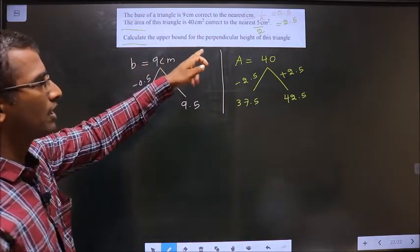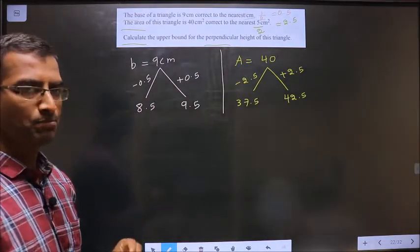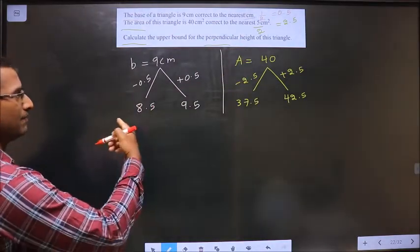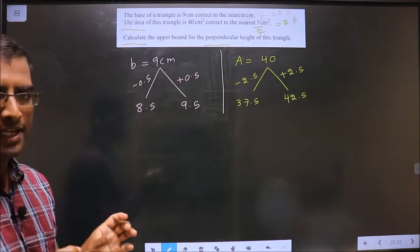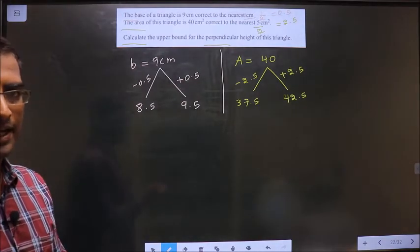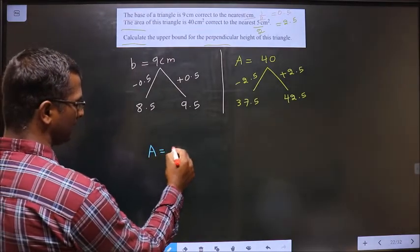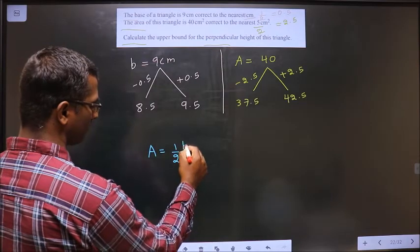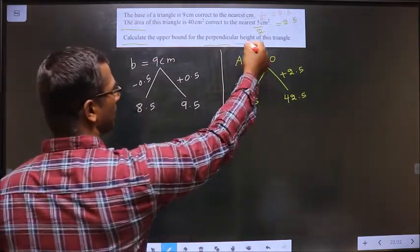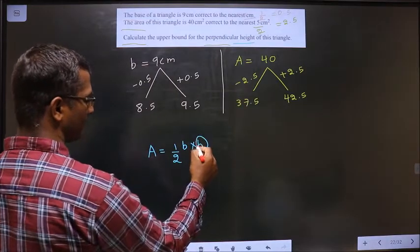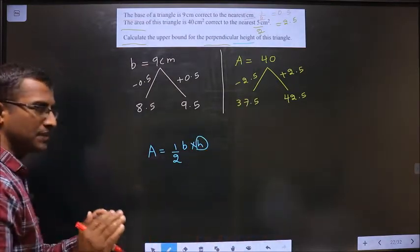Calculate the upper bound for the perpendicular height of this triangle. Area is given, base is given, you need height. What is the relation between area, base and height of a triangle? Area of a triangle is nothing but half base into height. You need to find perpendicular height. For that, make h the subject first.